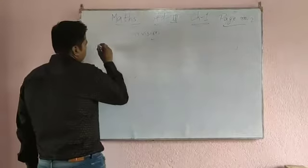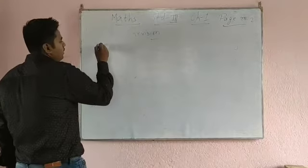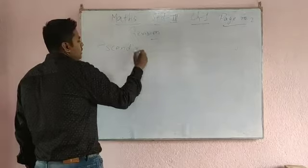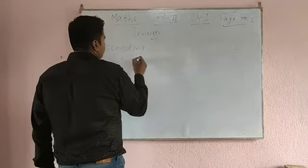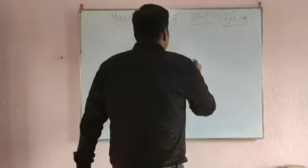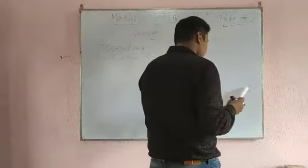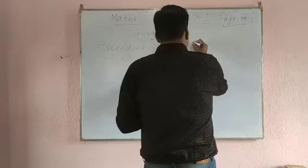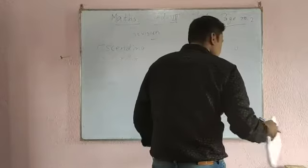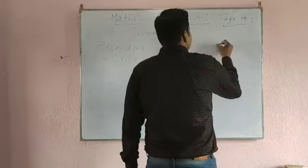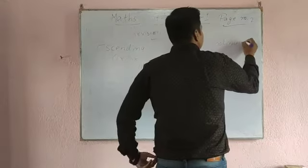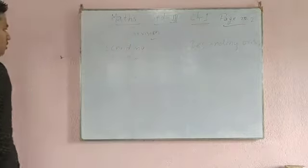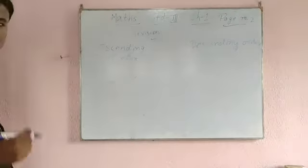First we have ascending order — A, S, C, E, N, D, I, N, G — ascending order. The second one is descending order — D, E, S, C, E, N, D, I, N, G — descending order. The first one is ascending order, the second one is descending order.